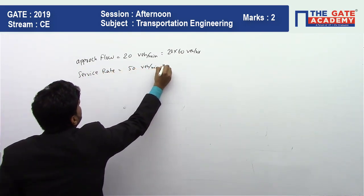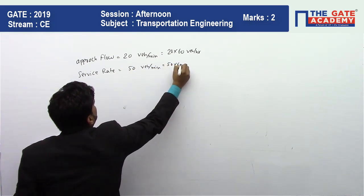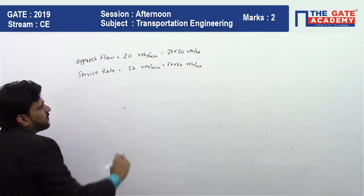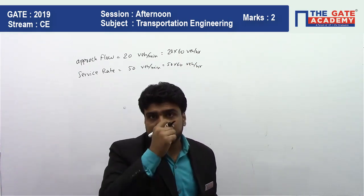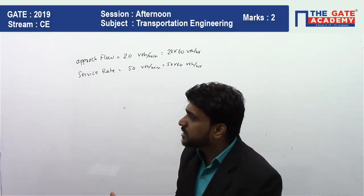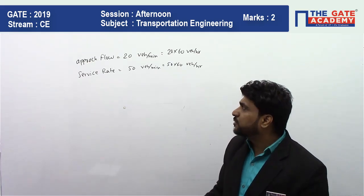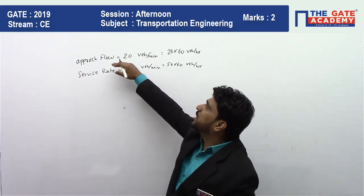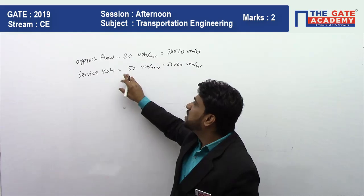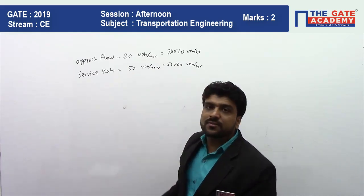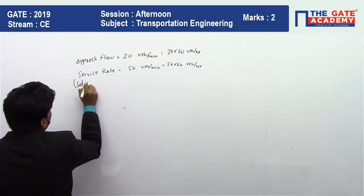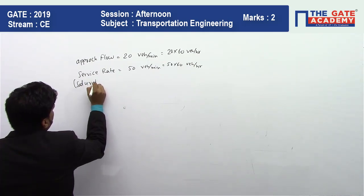What do we mean by service rate? Service rate means the maximum service that road can provide. Right now you are getting 20 vehicles per minute, but that road can provide a flow of 50 vehicles per minute. So this service rate is essentially the saturation flow.